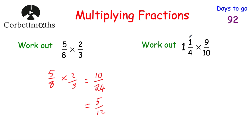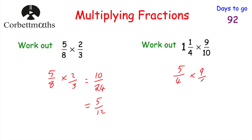Now let's have a look at how we would deal with mixed numbers. Thinking back to adding fractions, whenever we were adding or subtracting fractions with mixed numbers, we turned them into top-heavy fractions, and we're going to use the same technique. So 1 times 4 is equal to 4, plus 1 is equal to 5, so 1 and a quarter would be 5 quarters. Remember that if we're dealing with quarters, in a whole there's 4 quarters, so 1 and a quarter is 5 quarters. And then we've got multiply by 9 tenths.